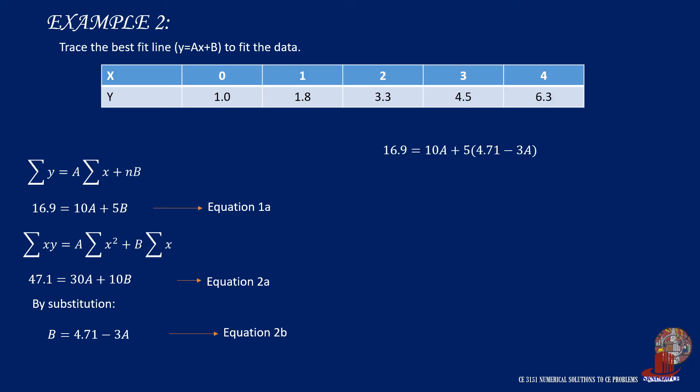Plug equation 2b into 1a giving 16.9 equals 10a plus 5(4.71 minus 3a). And by simplifying terms, a is computed as 1.33.